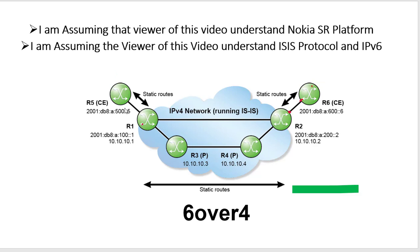First we will check the connectivity between R5 and R1, then check the connectivity between R2 and R6. Next we will configure a static route for R6's IPv6 system IP address on R5, and for R5's IPv6 system address on R6. Let's start the configuration.